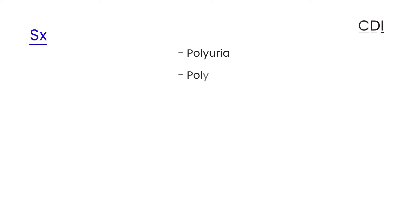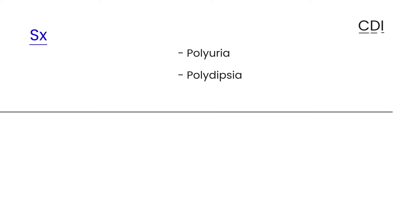Let's get into the symptoms. The first symptom is polyuria — you urinate a lot. And the second is polydipsia — you're very thirsty and drinking enormous quantities of fluid. Those are the two main symptoms of central diabetes insipidus.